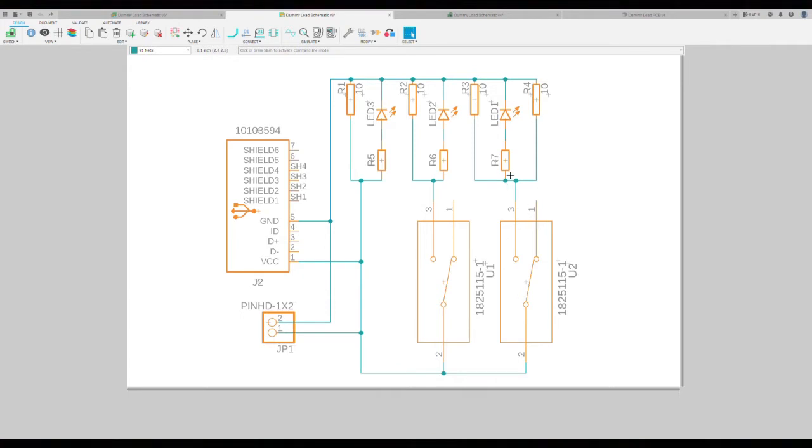This is so we can get 0.5 amps, 0.5 amps, 1 amp. And depending on when we switch them on, we can get 0.5, 1, 1.5 or 2 amps. I did also add a connector here, but I don't think I'm going to put this into the final design.